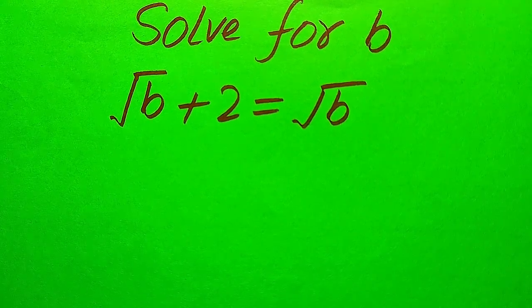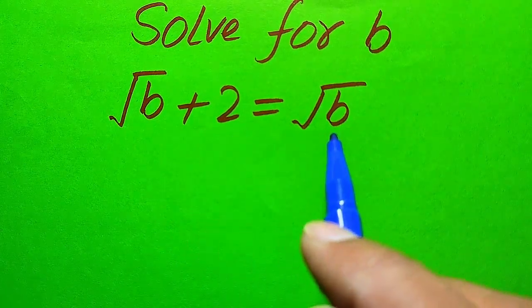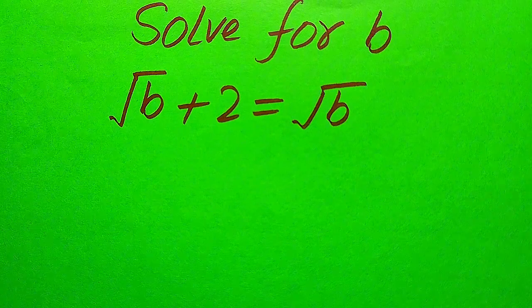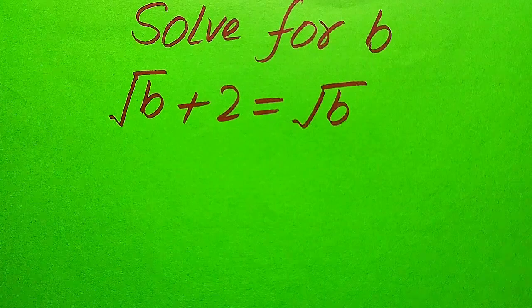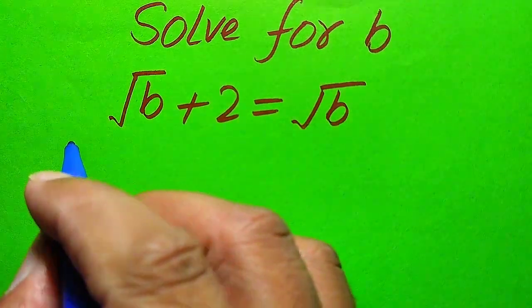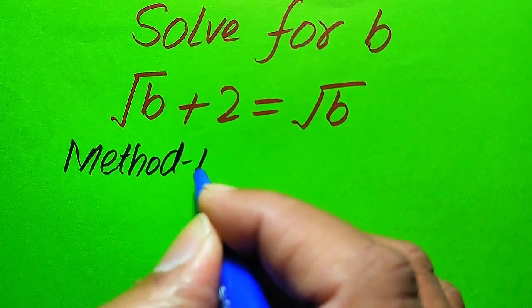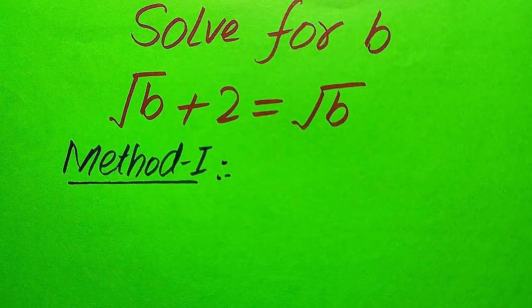Hello everyone. How to solve this problem for the values of B, if we have square root of (B+2) equals square root of B? We solve this problem for all the values of B, finding all the roots of this equation. We will solve this problem using two methods. If you have any other method in mind, please don't hesitate to write it in the comment section.